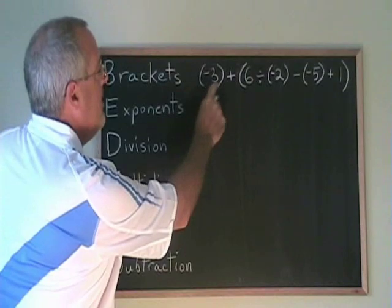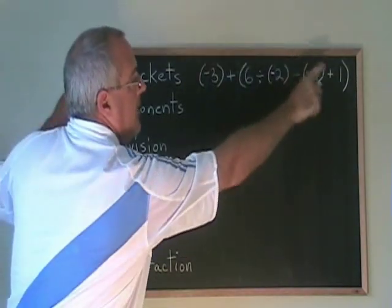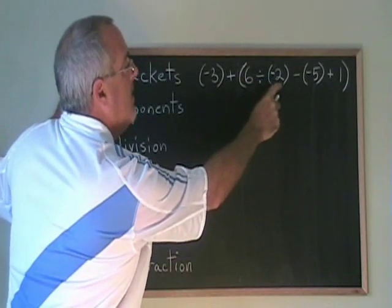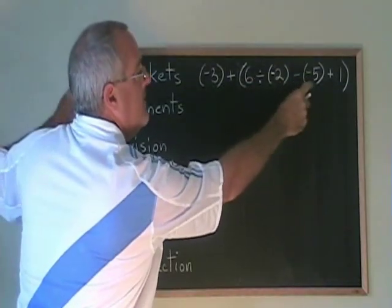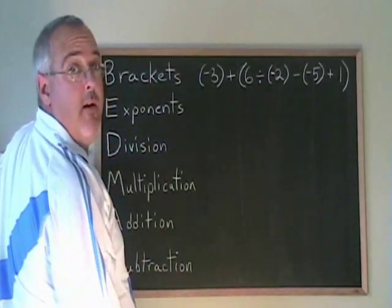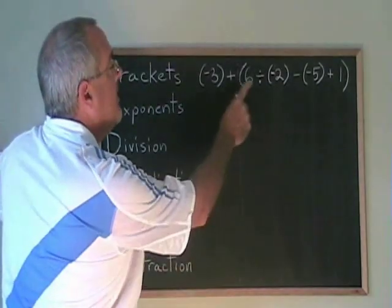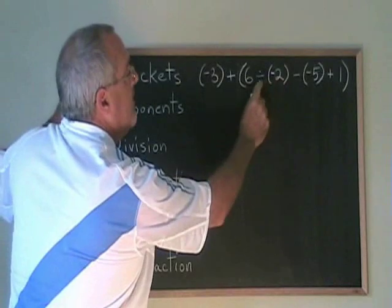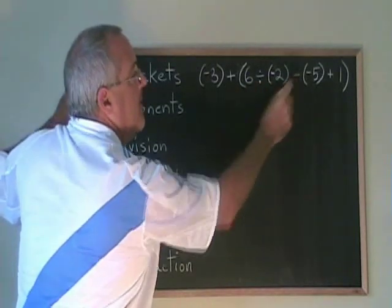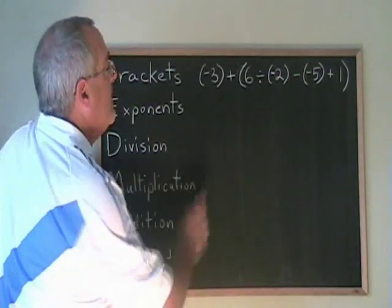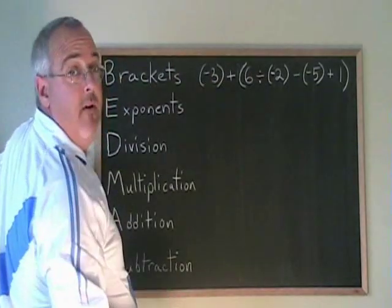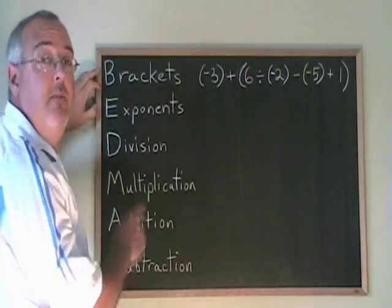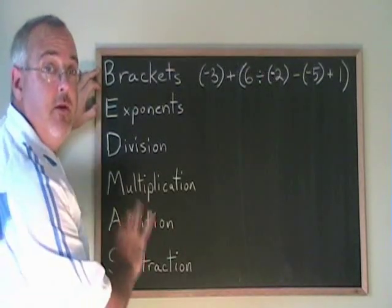We have negative 3 plus, and then we have a large bracket. Inside the bracket, 6 divided by negative 2 minus negative 5 plus 1. We have a bracket, we have a division, we have pluses and minuses, and we have several negative numbers involved. If we apply the rules of BEDMAS and apply the laws of integers, this should be no problem.